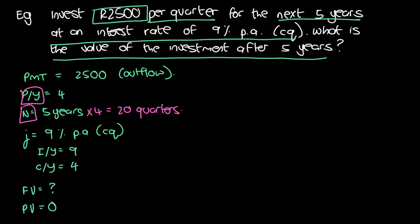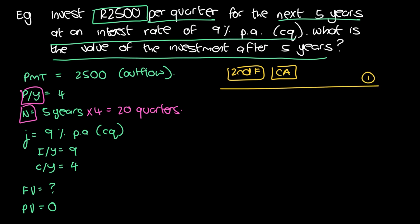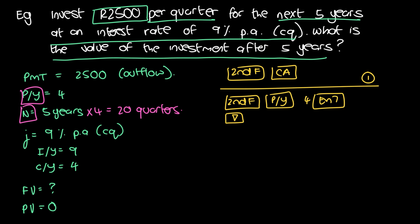That's all the information we have and all we need. Let's write down the calculator recipe first. No matter what, we start by clearing previous calculations: second function CA. Then we input payment periods and compounding periods: second function P/Y, enter four, then press enter. Since it's a simple annuity, C/Y should be the same — press the down arrow to check that C/Y equals four, then press ON/C to clear and get ready to enter our values.